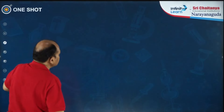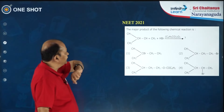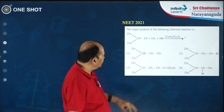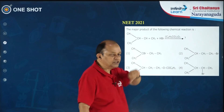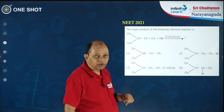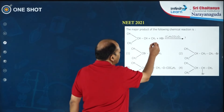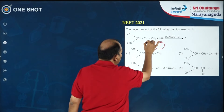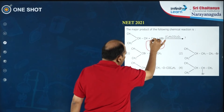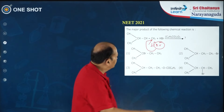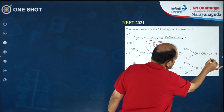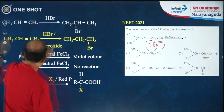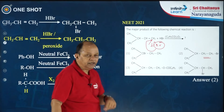A question from NEET 2021 based on these reactions: an asymmetrical alkene is treated with HBr in the presence of benzoyl peroxide — anti-Markovnikov addition. Br⁻ goes to the carbon having more hydrogens in the presence of peroxide. Looking at the options, option 2 is the right answer.